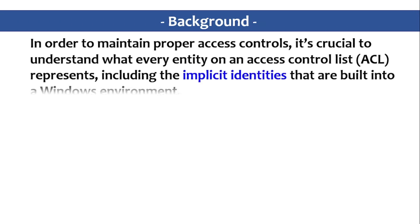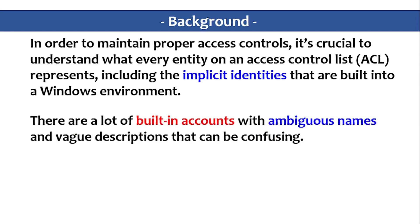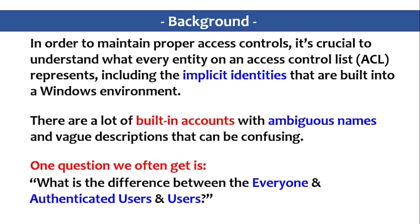Before going ahead, let's look at the background. In order to maintain proper access controls, it's crucial to understand what every entity or access control list represents, including the implicit identities built into any Windows environment. There are many built-in accounts and groups with ambiguous names and vague descriptions, which are very confusing. A common question is: what is the difference between Everyone, Authenticated Users, and the Users group in Active Directory?